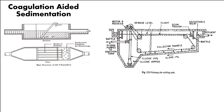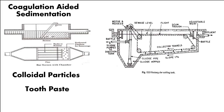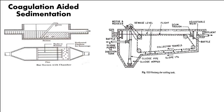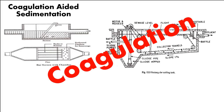Small particles — even though you leave them for many hours — they never settle. The best example is colloidal particles. For example, milk is made up of white pigments called colloidal particles. Your toothpaste has white colloidal particles inside. Foam from soap is again colloidal particles. These particles never settle down. We need to forcibly make them settle. Therefore we have this chapter — Coagulation.